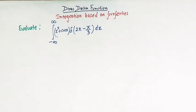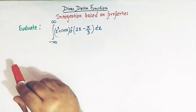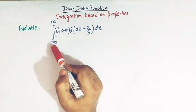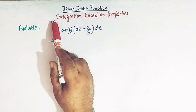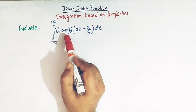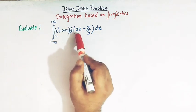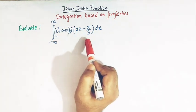Hello viewers. In today's class we are going to discuss yet another important and conceptual problem from Dirac delta function related to integration based on properties of Dirac delta function. Here we have to find the value of the integral from minus infinity to infinity of x squared plus cos x times delta of 2x minus pi by 3.